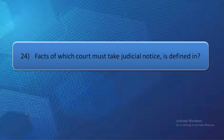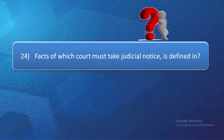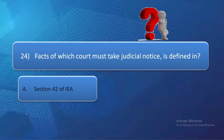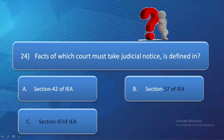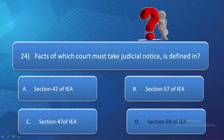Question number 24: Facts of which court must take judicial notice is defined in — option A: section 42, option B: section 57, option C: section 47, option D: section 59 of the Indian Evidence Act. Section 57 of the Indian Evidence Act describes facts of which the court must take judicial notice — जिन पर court को judicial notice लेना चाहिए.